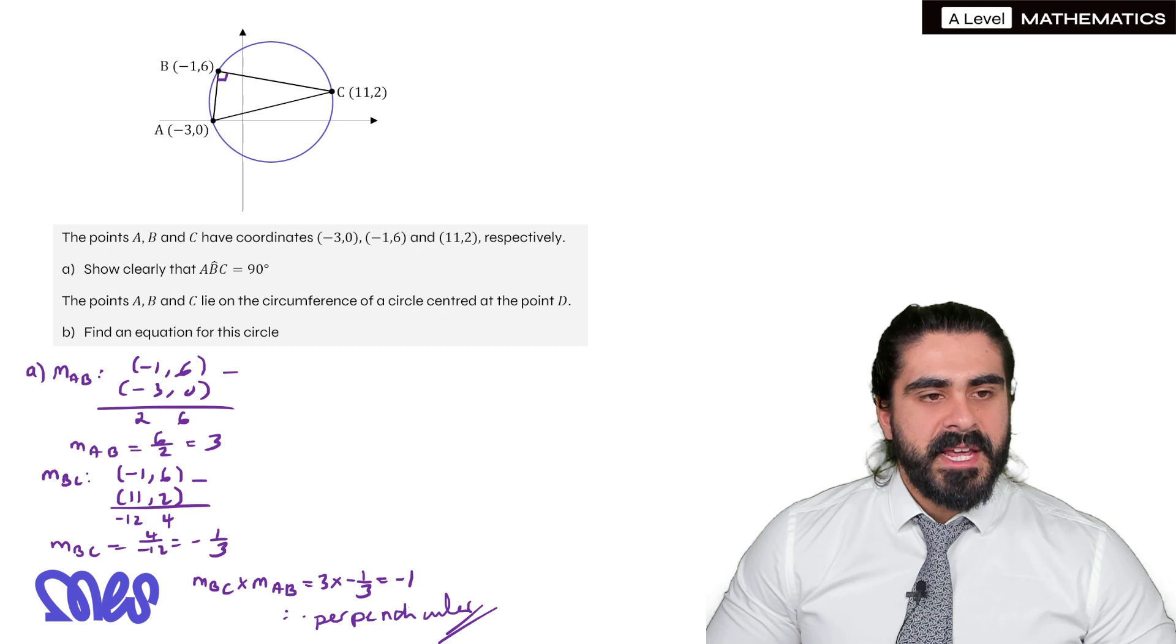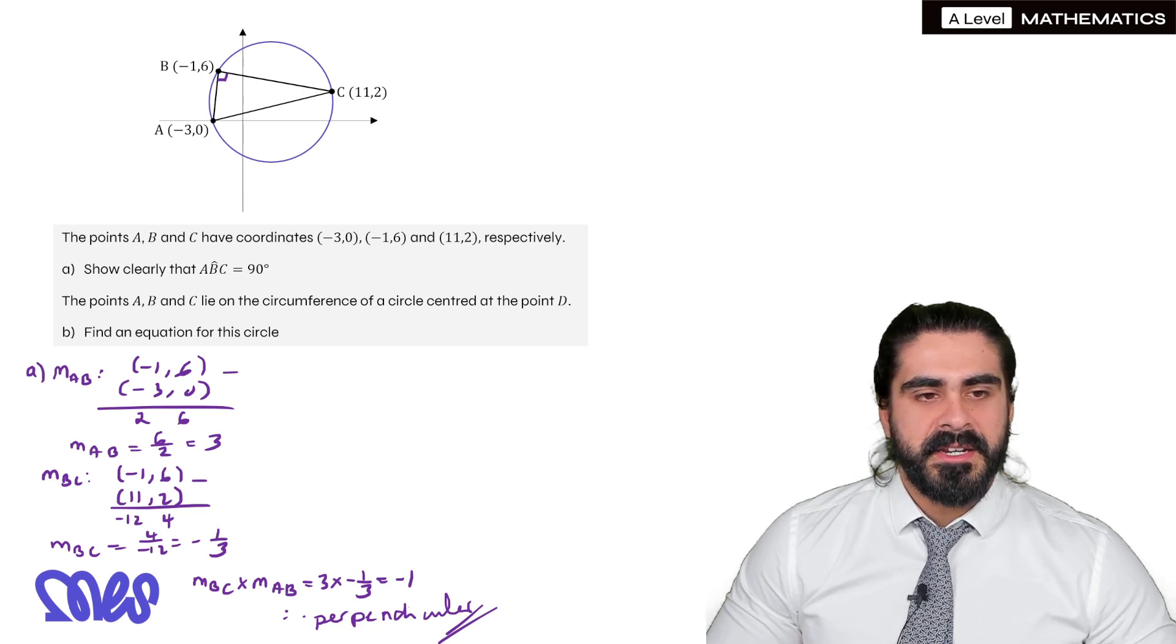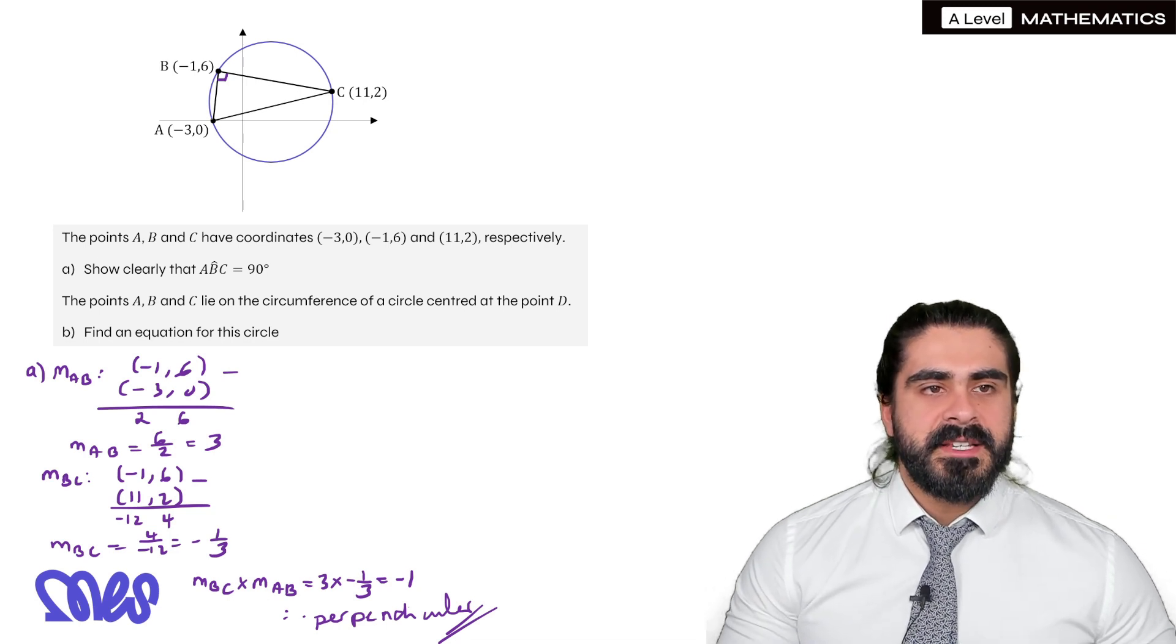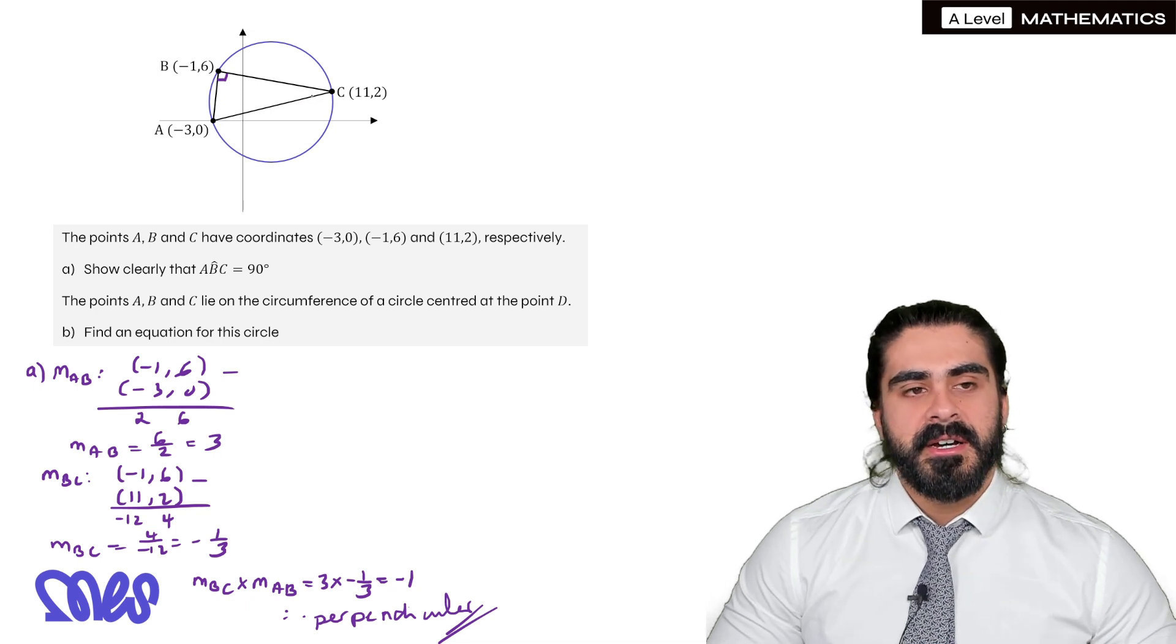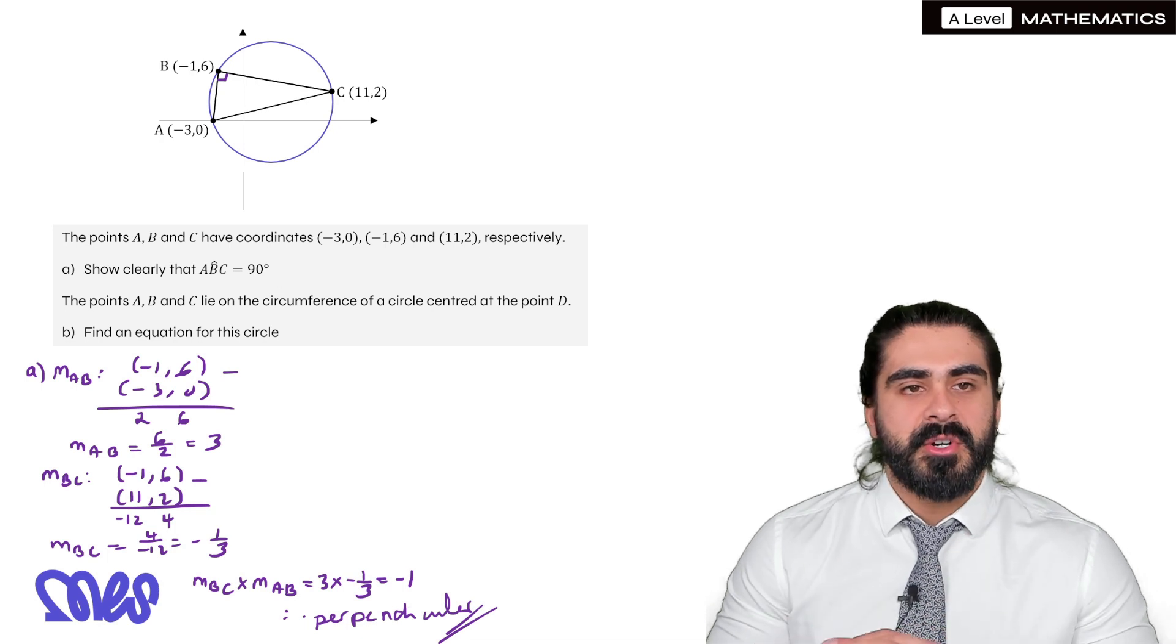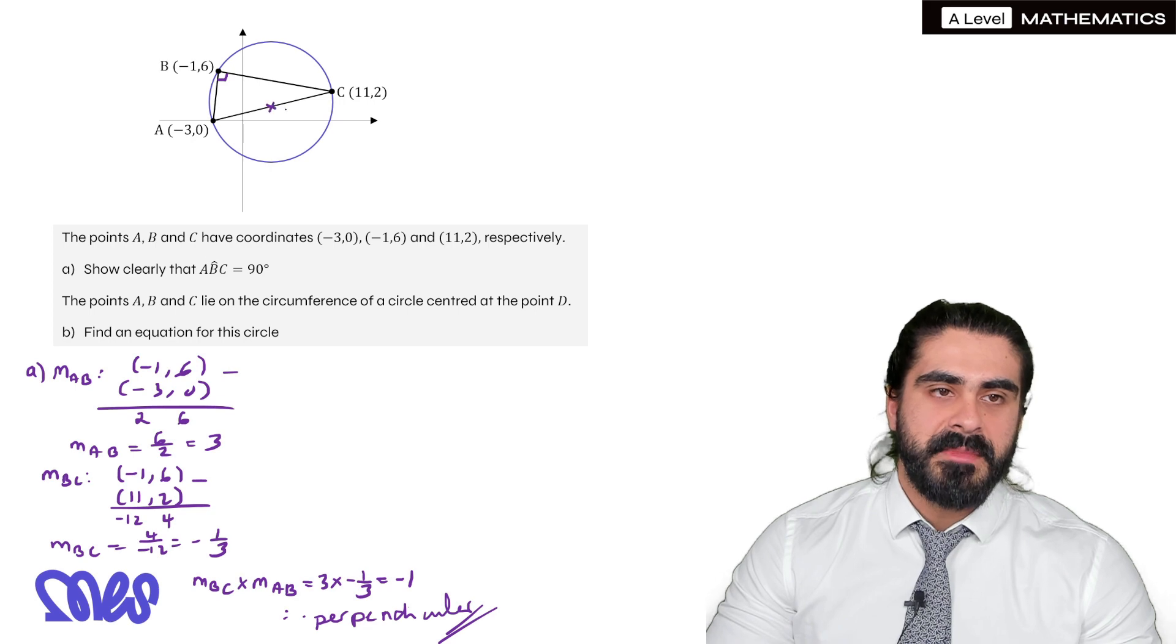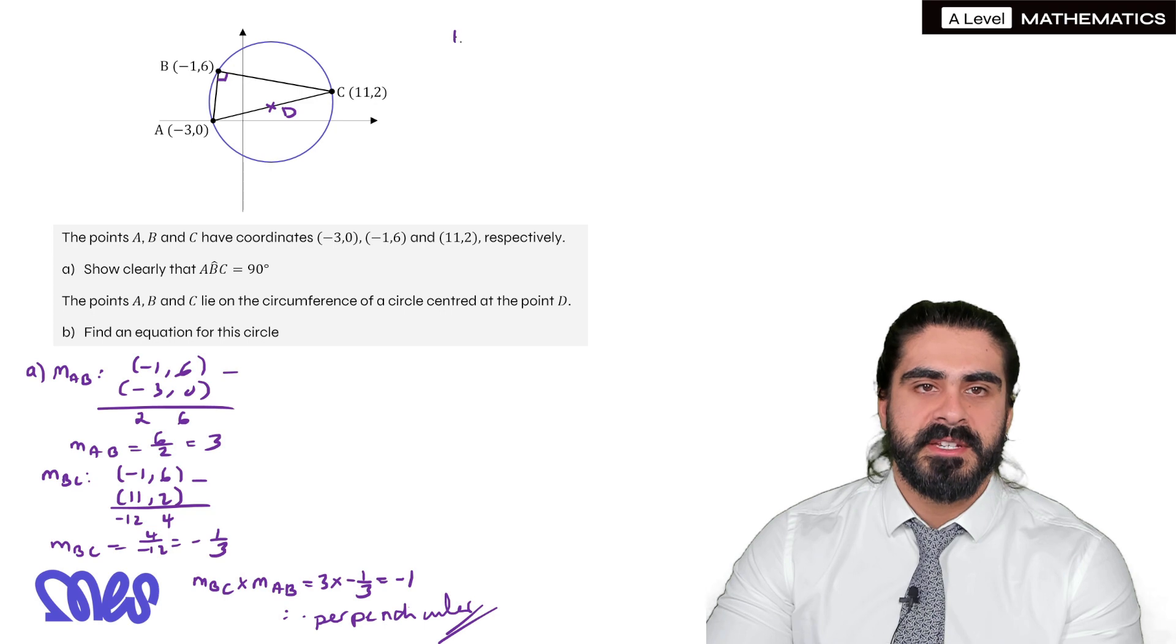Next question. The points A, B, and C lie on the circumference of a circle centered at point D. Find an equation of this circle. Because we have identified that this is 90 degrees, we can now assume that AC is the diameter of the circle because angles in a semicircle are 90 degrees, which means D is right in the middle of AC.